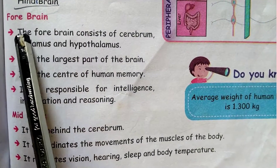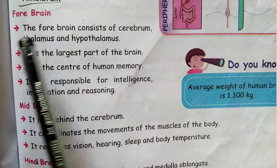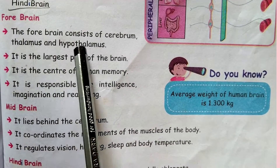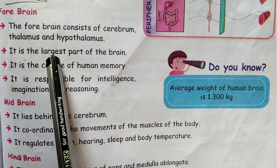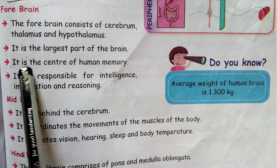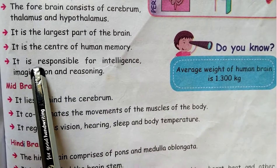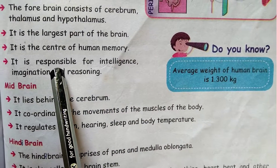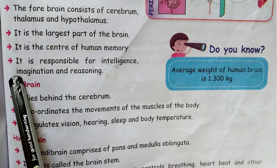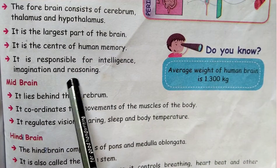Forebrain: The forebrain consists of the cerebrum, thalamus, and hypothalamus. It is the largest part of the brain and the center of the human brain. It is responsible for intelligence, imagination, and reasoning.